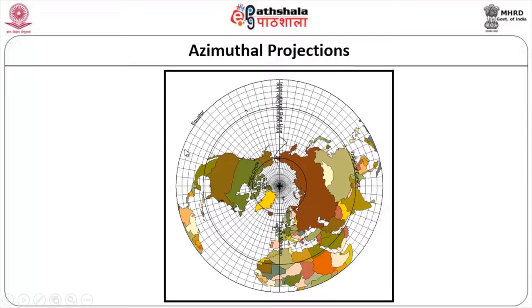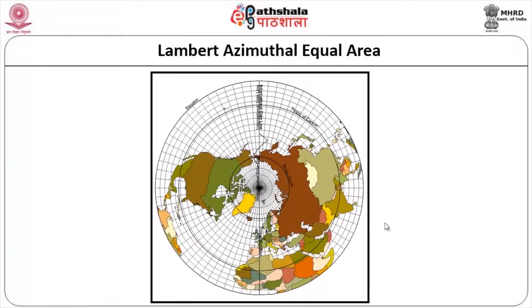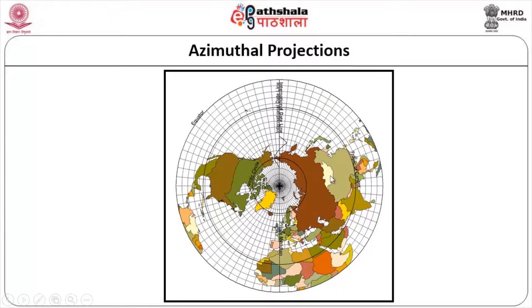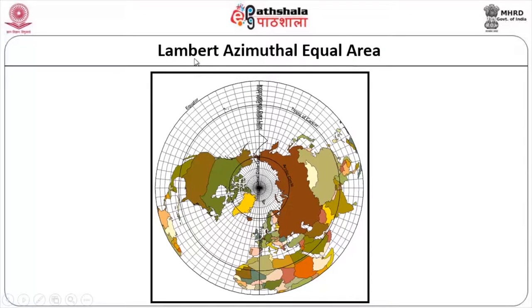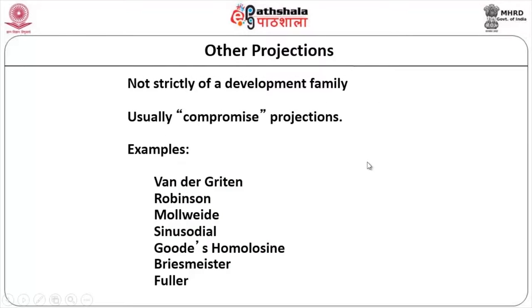This is your azimuthal projection — you can see how it appears as a circular planar surface. Lambert azimuthal equal area projection is a general azimuthal projection devised by Lambert where the area will be equal throughout. There are other projections that do not belong to a specific family — they normally compromise on one or two aspects of distortion, whether shape or size.